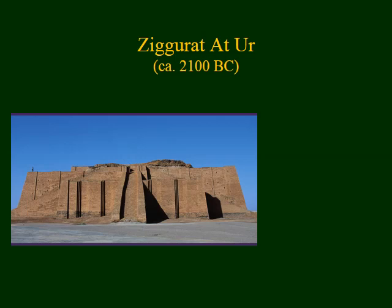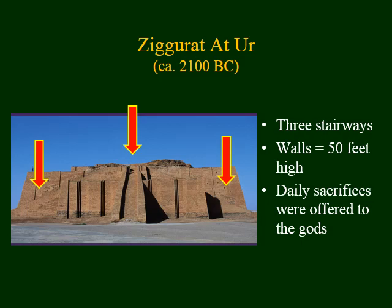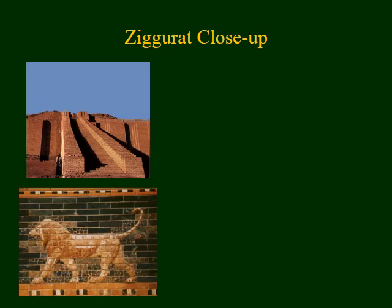Here we see another ziggurat at Ur, again in modern-day Iraq. There are three stairways to get to the top — one on the left, right, and center — and the walls are 50 feet high. The Mesopotamians wanted to please gods by erecting these monuments and offering sacrifices in the form of crops, successful hunts, and things like that. Here's a close-up of the same ziggurat; you can see they were made of brick. Some ziggurats had mosaics like the lion shown here on the left.